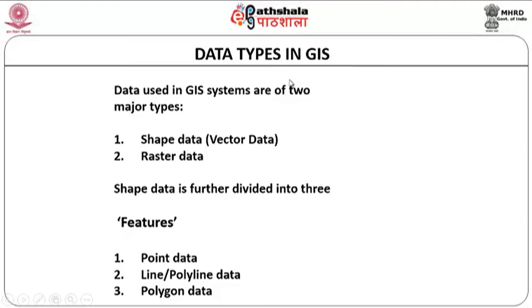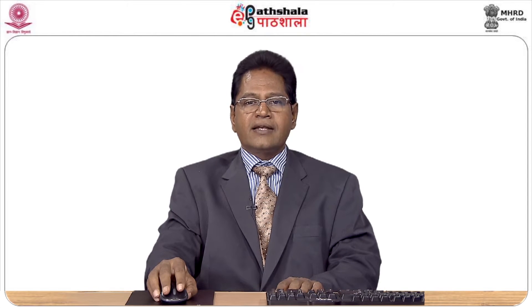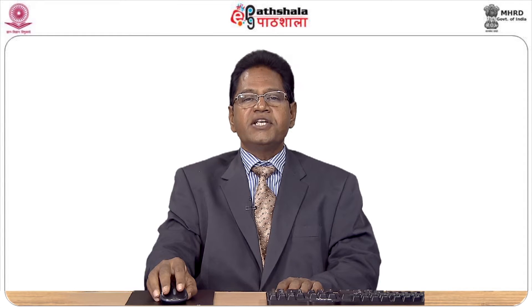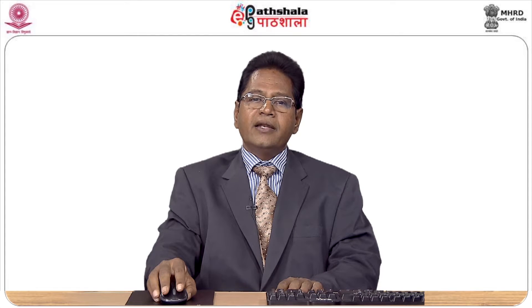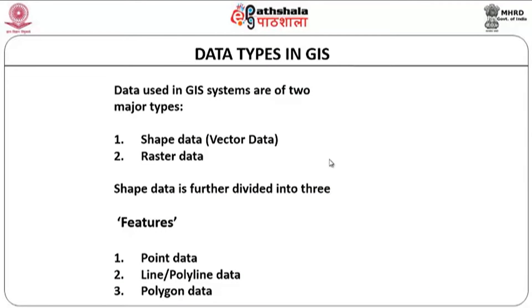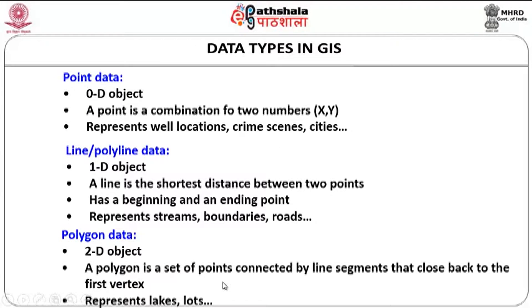Now, the major types of data input into a GIS environment: we have two types — vector data and raster data. Vector data in GIS is specifically called shape data. Data which is in the form of a specific shape is called a shapefile. It could be point data, line data, or area data. All data in the form of vector data or shape data are otherwise called features — there could be point data, line data, or polygon data.